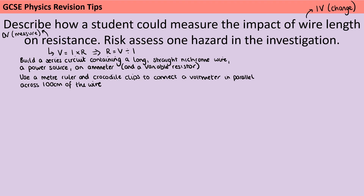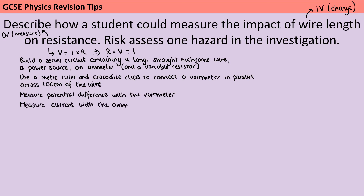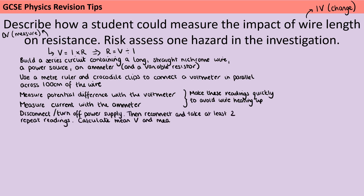Then we're going to use a meter ruler, measure 100 centimeters of this wire, and attach with crocodile clips our voltmeter in parallel across that wire to measure the potential difference. We want to take those readings nice and quickly because if we leave the circuit connected for too long, the wire may start to heat up, which would affect the resistance. Then turn off your power supply, reconnect it, and take those measurements again — this allows us to check for repeatability and calculate a mean potential difference and a mean current for that same length of wire.